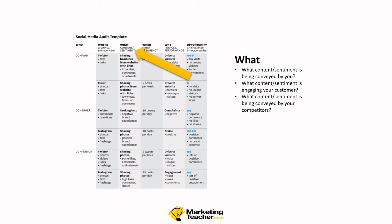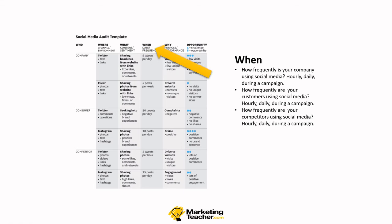What content or sentiment is being conveyed by you? What content or sentiment is engaging your customer? And what content or sentiment is being conveyed by your competitors? Content in straightforward terms is text, images, video, or software. What kind of content is being used, and what kind of sentiment is being conveyed? Is it about a campaign, is it to inform customers, is it to reinforce? You can check on these two things as you audit What.